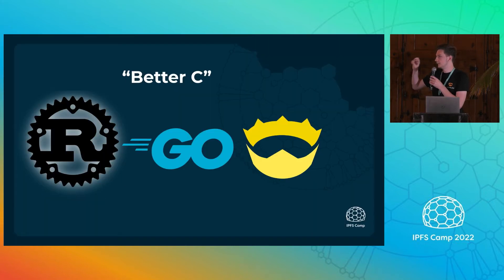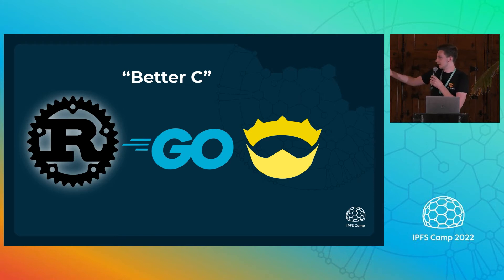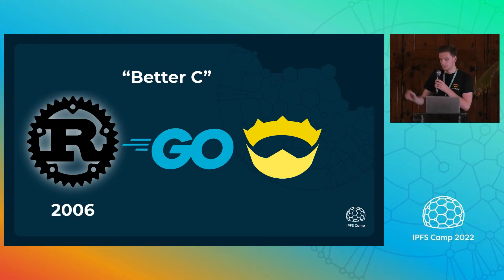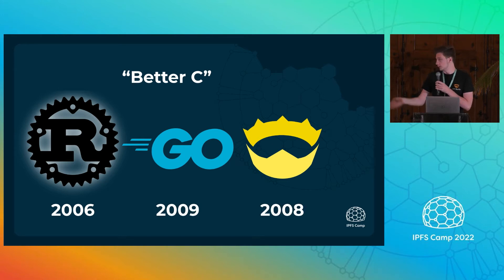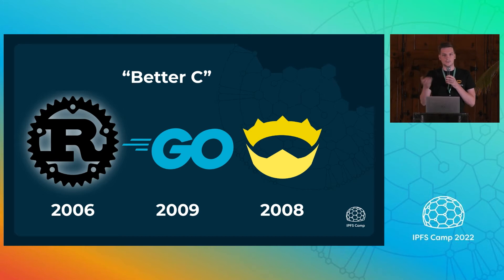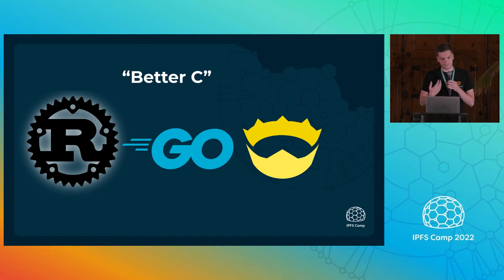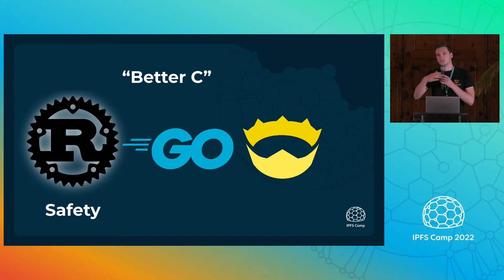Nim is one of these 'better C' attempts — C is still the best, sorry. I'll compare here with Rust and Go. They all started around the same time: Rust was started in 2006, Go in 2009, and Nim in 2008. But they have very different features, goals, and everything. In my opinion, Rust's killer feature is safety with no runtime garbage collection. Go is concurrency — you can do crazy stuff with goroutines and everything.